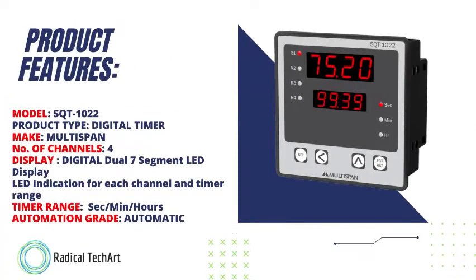Talking about product features. Model is SQT1022 Multispin make. Its product type is digital timer. Its number of channels are 4. Display type is digital dual 7-segment LED display. LED indication for each channel and timer range — timer range is selectable: second, minute, or hours. Automation mode is automatic.